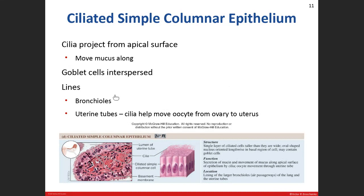You'll see ciliated simple columnar epithelium in the respiratory tract, in our bronchioles, and also in the reproductive tract in the uterine tubes. During ovulation, when the oocyte is released from the ovary, it has no flagellum and no ability to get into the uterus on its own. The uterine tubes are lined with this epithelium, and those cilia beat in the direction of the uterus, sweeping the oocyte down. It takes about six days for that journey.